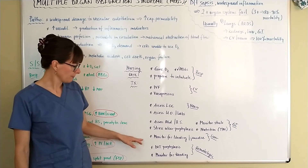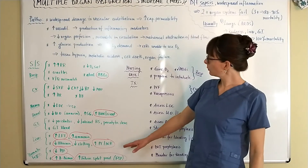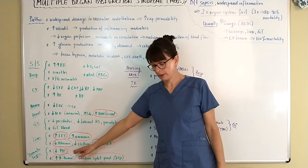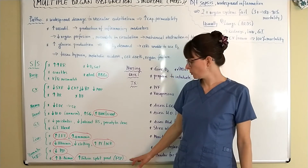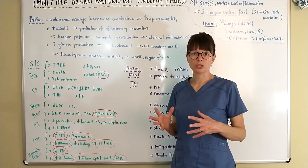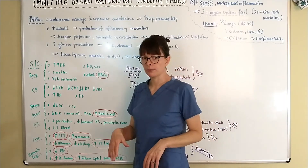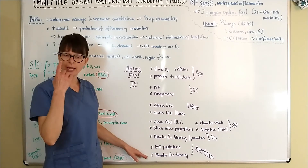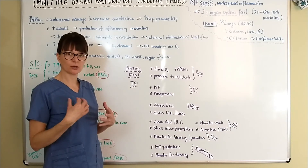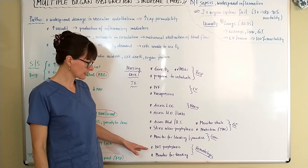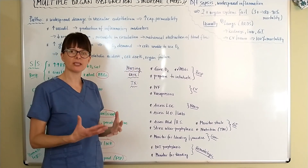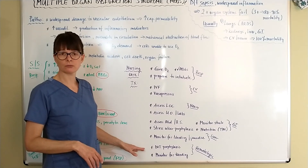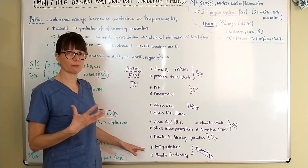Hematologically, with microclots in the circulation causing mechanical obstruction, we may see a decrease in platelet count as well as elevations in D-dimer and fibrin split products, which are important in the coagulation cascade. Nursing care includes monitoring for bleeding — not only in stools but also at gums, IV sites, or minor scratches — and DVT prophylaxis, since the patient is prone to clotting and emboli that could cause further organ dysfunction.